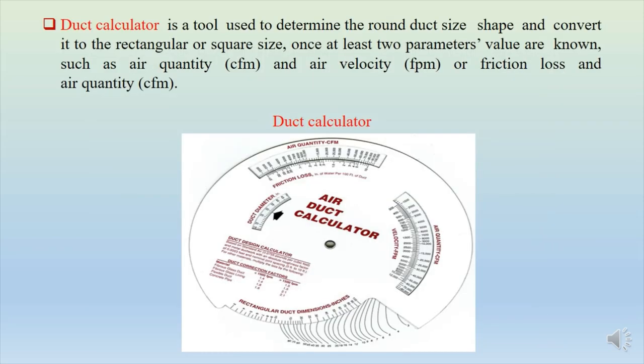The duct calculator is another tool to determine the round duct size. You may also convert the round duct size to rectangular or square size once at least two parameter values are known, such as CFM and air velocity in feet per minute, or friction loss and air quantity.